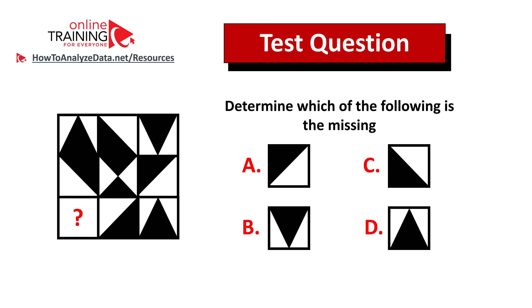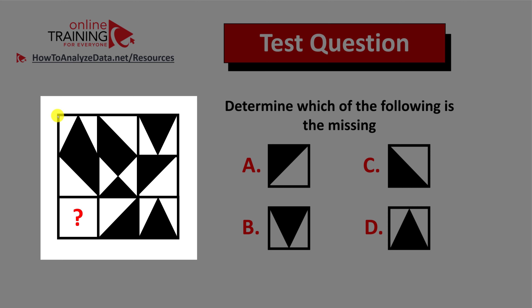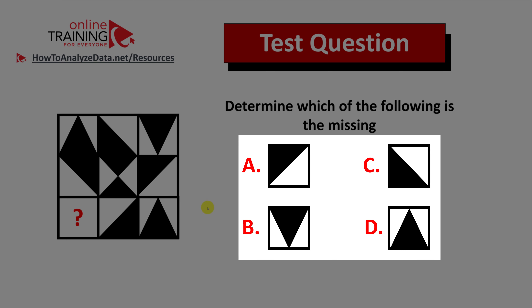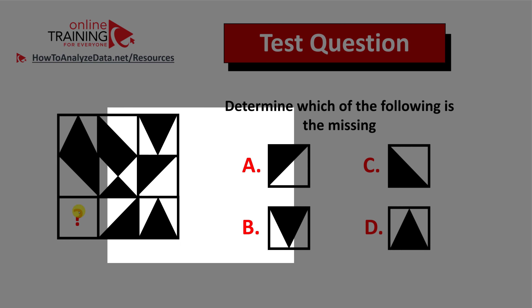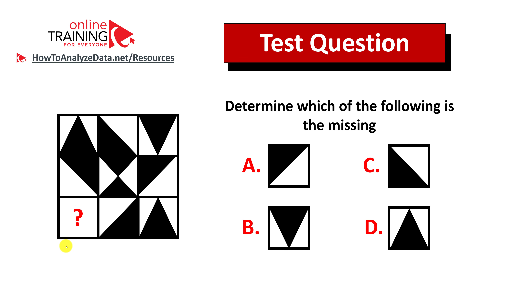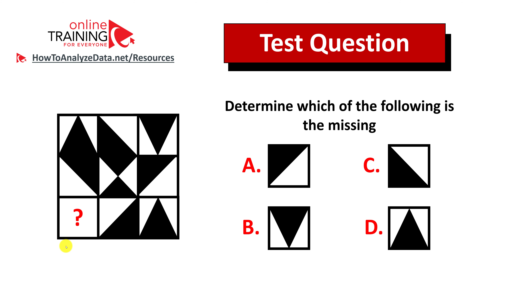Let me share with you an interesting question which tests your reasoning skills. Determine which of the following is missing. You're presented with a large square which can be logically broken into a three-by-three grid of small squares, and four different choices: A, B, C, and D. There is a missing square in the bottom left corner. Now might be a good time to pause this video and give yourself 10 to 20 seconds to figure out the solution.